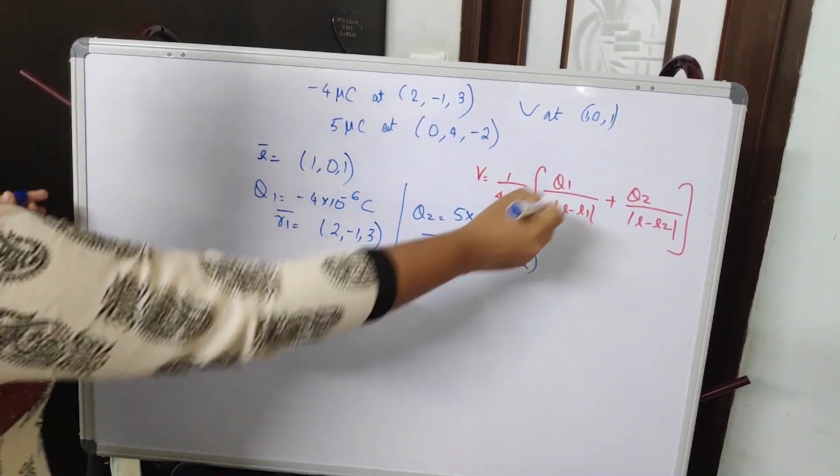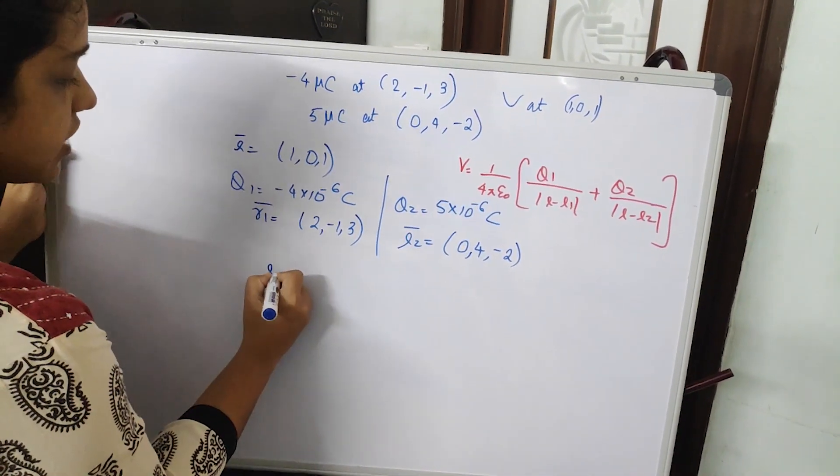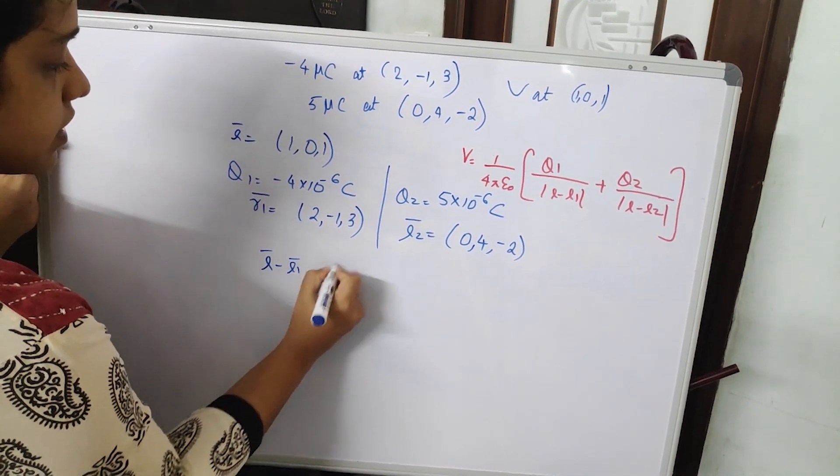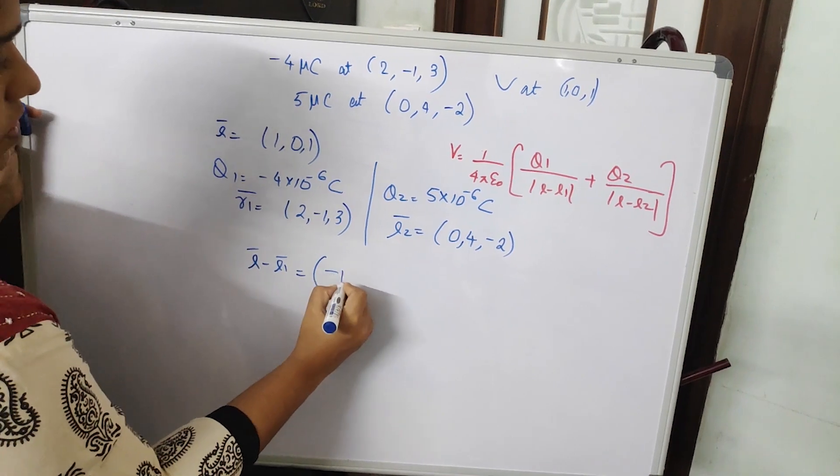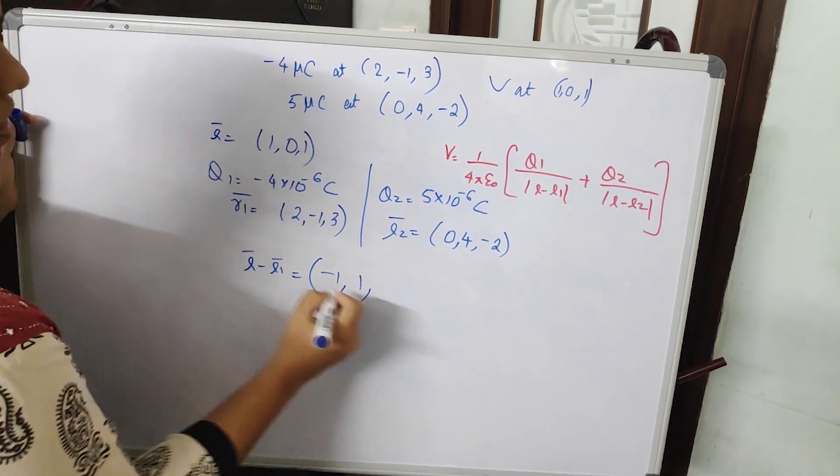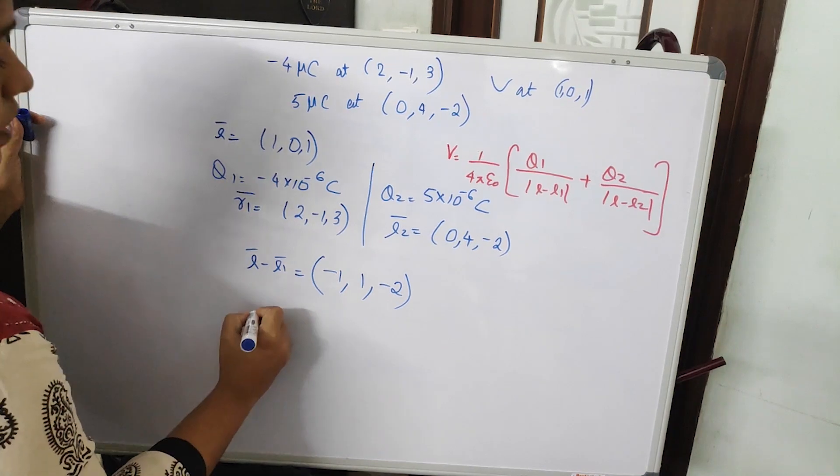We can directly substitute in this equation and how to calculate vector r minus r1? Just subtract the corresponding coordinates: 1 minus 2 that is minus 1, 0 minus minus 1 that is 1, 1 minus 3 is minus 2.